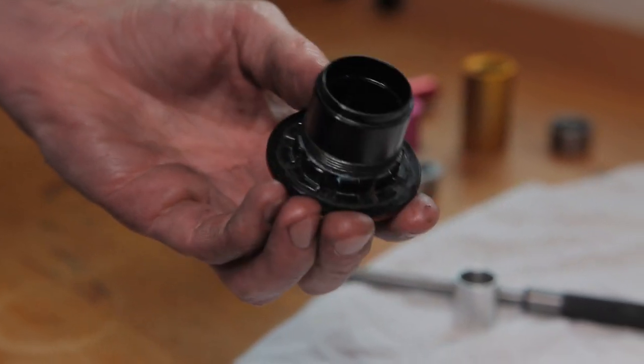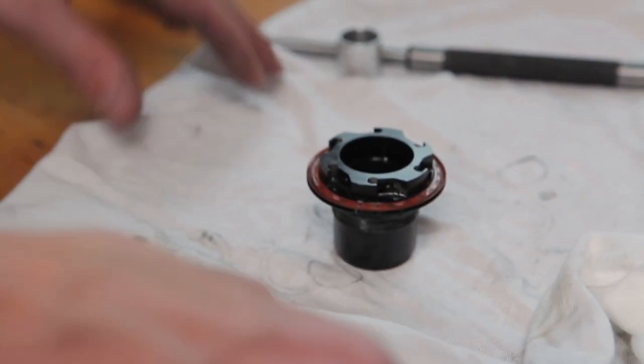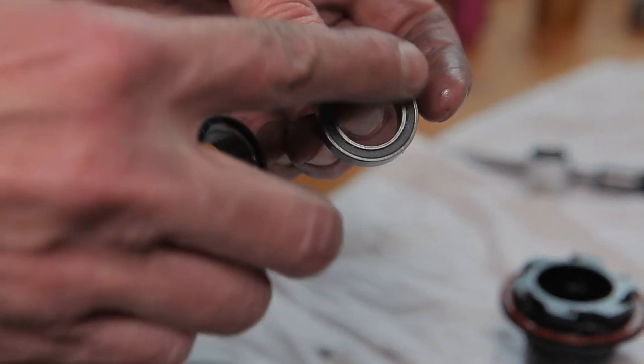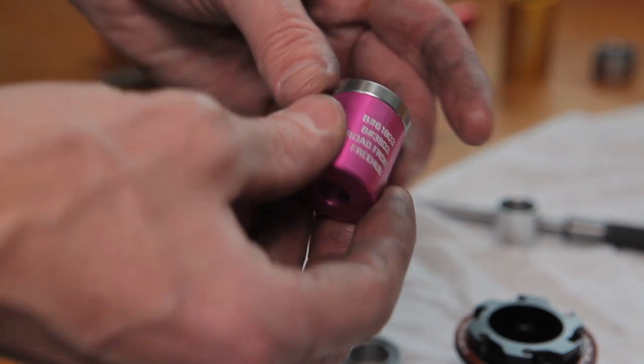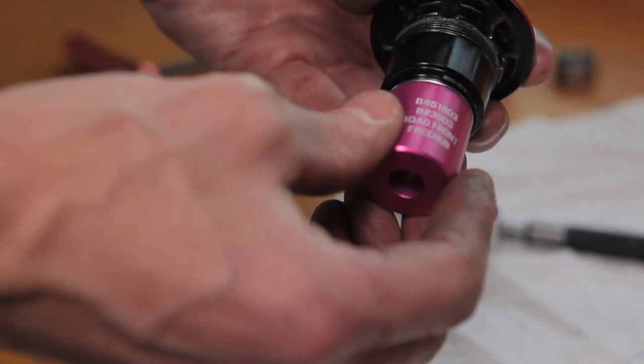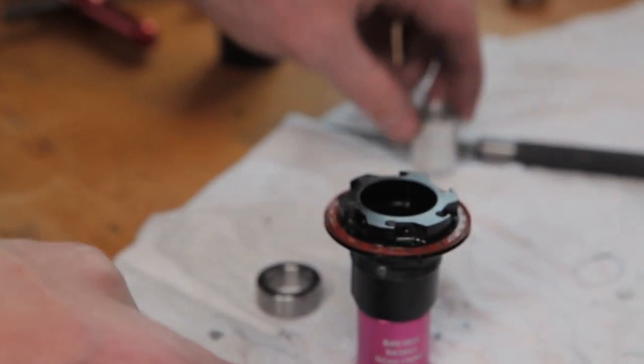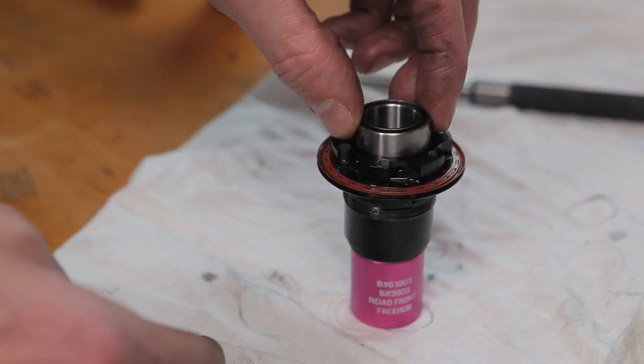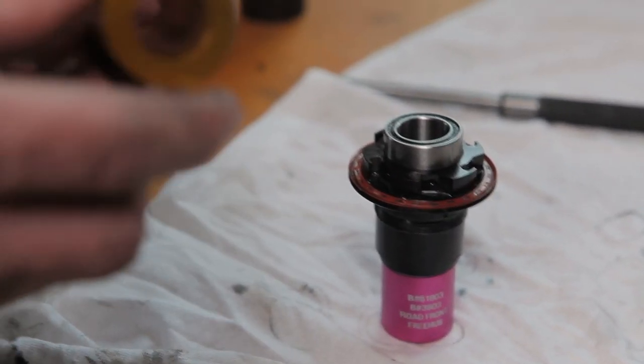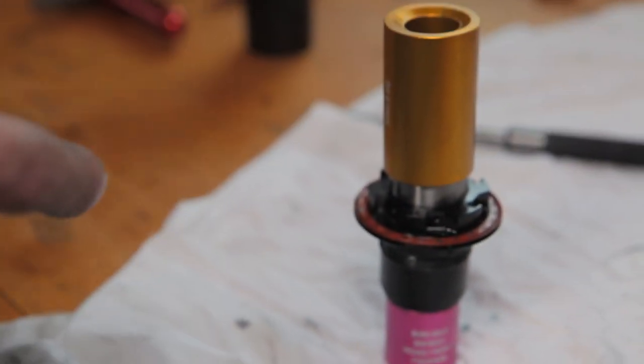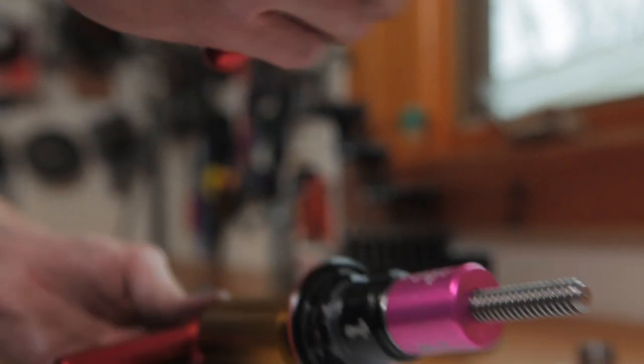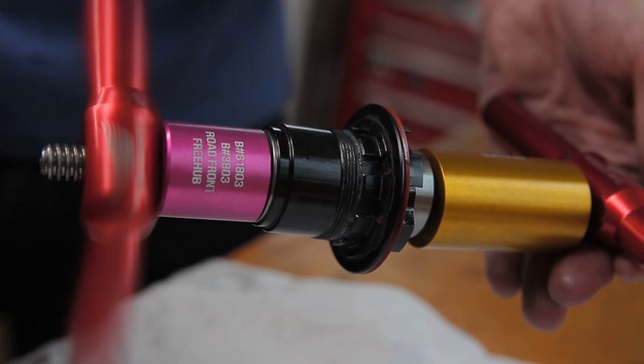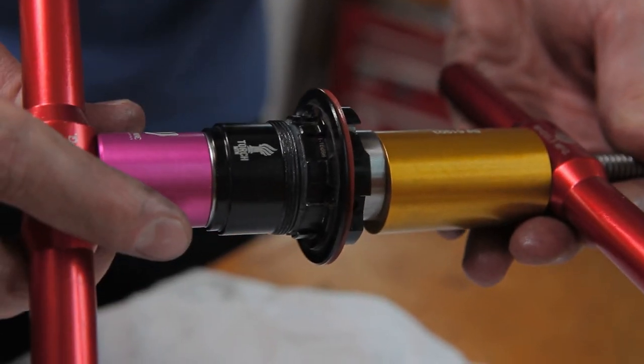To repress your freehub bearings, start by putting the single row bearing on the 61803 adapter. Be sure the gray LLU seal is facing outboard on the 61803 bearing. Slide the freehub body over the adapter and the bearing. Drop the spacer into the freehub shell and slide the 3803 bearing into its position. Here, you'll use the flat side of the adapter against the double row bearing. With the press installed and the adapter centered, tighten the press until both bearings are fully in their seat.